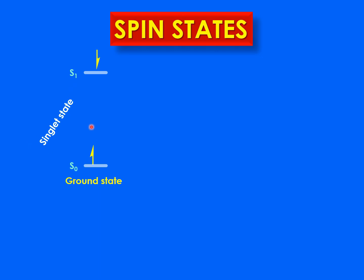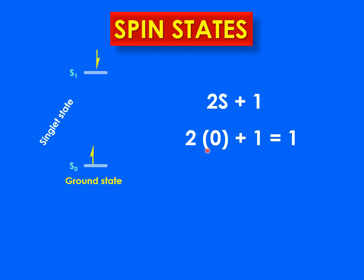We call S1 a singlet state. The formula to calculate spin states is 2S + 1, where S is the overall spin of the system. In this case, one electron has +½ spin and the other has −½ spin, so the overall spin is 0. Therefore 2×0 + 1 = 1, and that is why we say this is an excited molecule in the singlet state. Remember that during this process of excitation, the spin of the electron does not change.